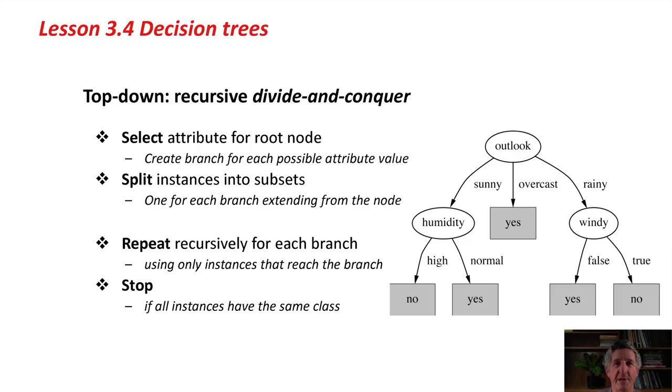You select which attribute to split on at the root node, and then you create a branch for each possible attribute value. That splits the instances into subsets, one for each branch that extends from the root node. Then you repeat the procedure recursively for each branch, selecting an attribute at each node.